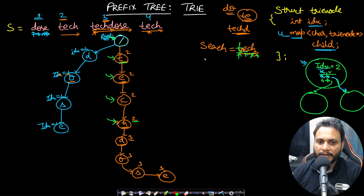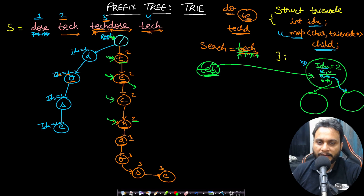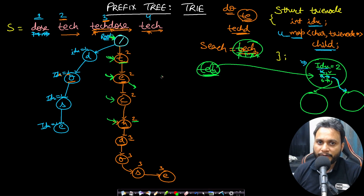Now let's say I was searching for 'teh.' I will start at the root node, go to 't,' then 'e,' but after this there is no pointer to 'h.' I will always be checking each character in the key-value pair in the map — if the character is not present as a key, then that entry is not present, and so this search string itself is not present as a prefix. Return minus one.